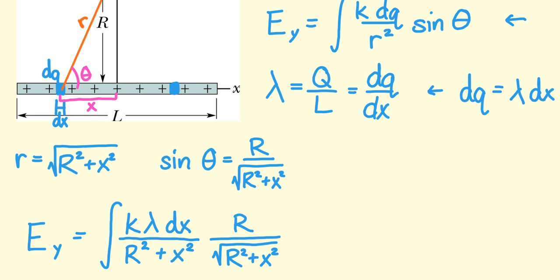I want to think about what's the smallest x can be and what's the largest x can be. If I think about the smallest, that would be this leftmost piece right here. And that would be at a distance of negative L over 2 from that point that's directly underneath point P. If I think about the right end, that would be at a distance of positive L over 2.